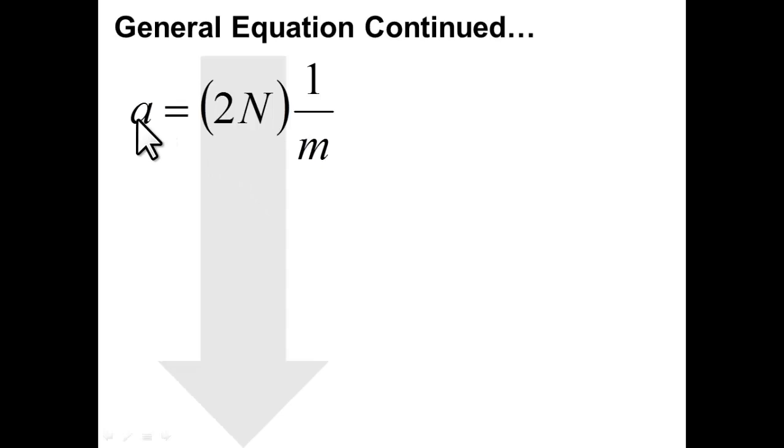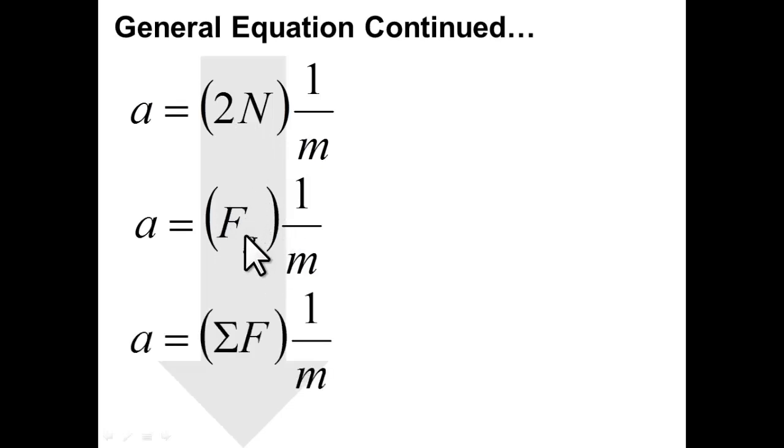So, if we take the equation, acceleration is equal to two newtons times one over mass. If that two newtons was the force of gravity on the hanging mass, we just saw now, or reminded ourselves, that that is also equal to the sum of the forces on the whole system. So, our final general equation is this: acceleration is equal to the sum of the forces times the inverse of mass, or one over mass.